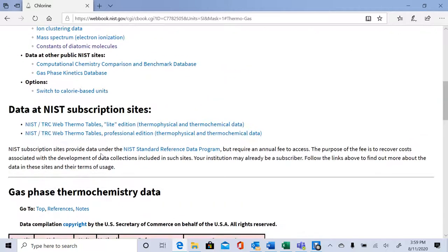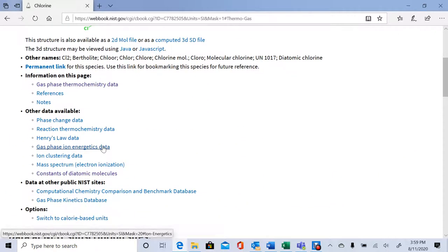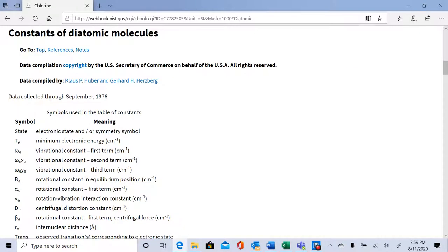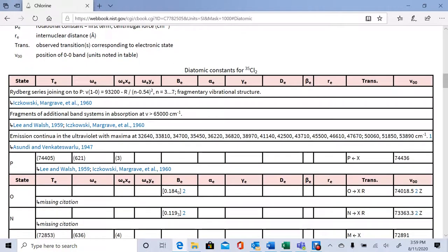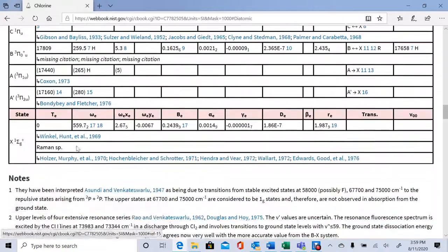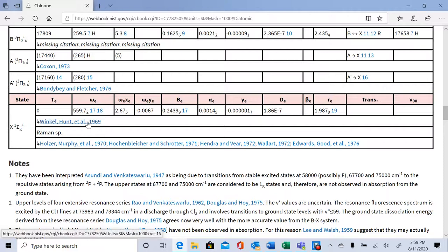The other values we need are in that other bullet point. If we scroll up, we can see constants of diatomic molecules. We scroll down and see this huge mess, but luckily we're just going to scroll right past it. What we're interested in is at the very bottom.